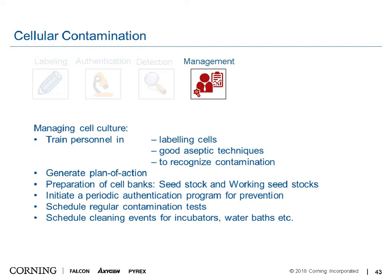A periodic authentication program is very helpful — detecting contamination early saves a lot of problems when publishing, where you might otherwise discover that experiments were done with, for example, lung cells instead of gut cells. Regular contamination tests should be performed at minimum for mycoplasma, since it is not visible and can have a big impact on results and cell behavior. Cleaning events should also be scheduled for incubators, water baths, and biosafety hoods.